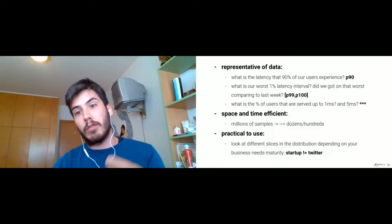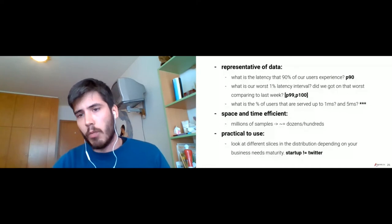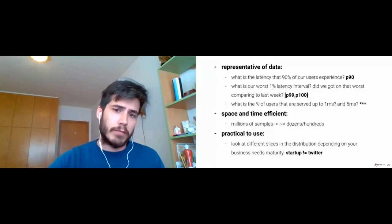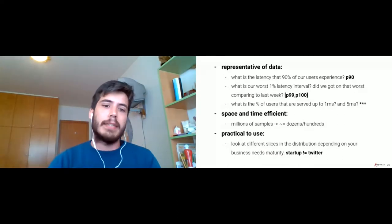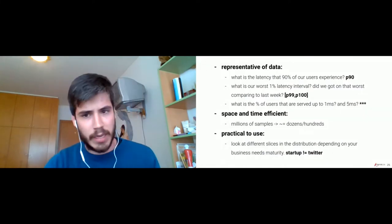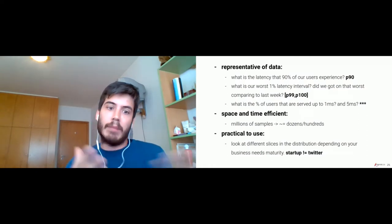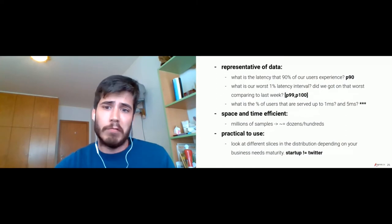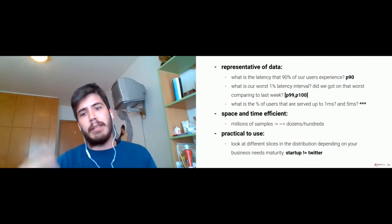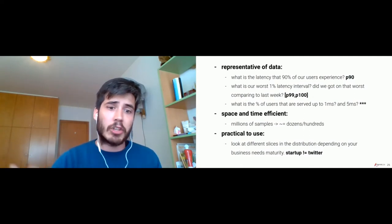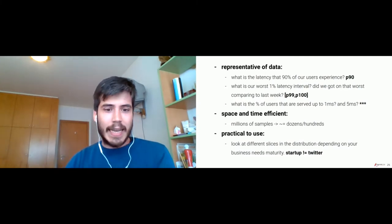Something that comes for free when we have data structures to compute percentiles is that we are also able to compute the inverse function — the CDF — which enables us to answer questions like what's the percentage of users that are served up to a certain latency, for example, one millisecond or five milliseconds. Regarding space and time efficiency, we are somewhere in the middle between having an average and having the full latency values — moving from millions of samples to dozens or hundreds of samples, depending on the data structure we are using.